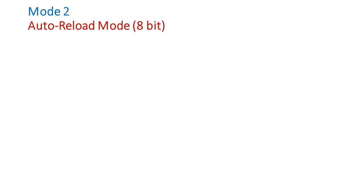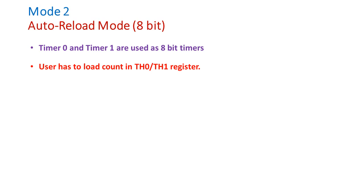In this lecture you are going to study Mode 2 of timer. Mode 2 is called the auto reload mode and it is an 8-bit mode. That means both Timer 0 and Timer 1 are used as 8-bit timers. The user can load an 8-bit count in the TH register — TH0 for Timer 0 and TH1 for Timer 1.